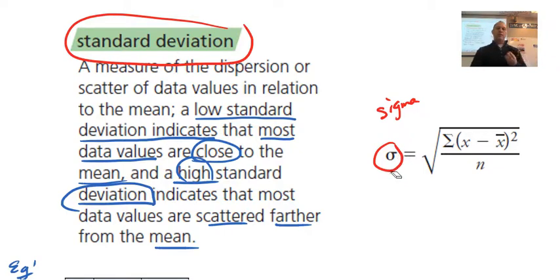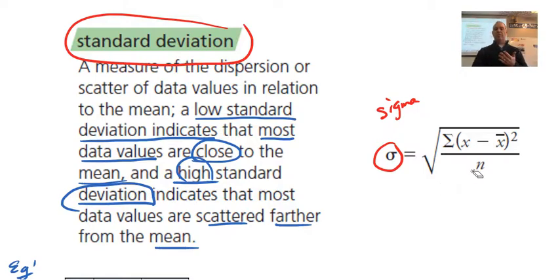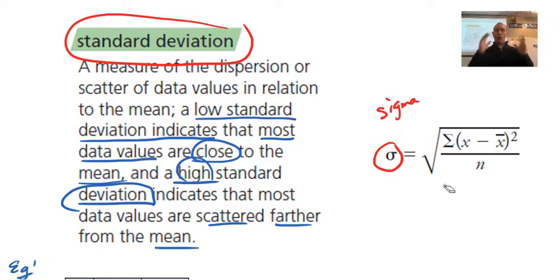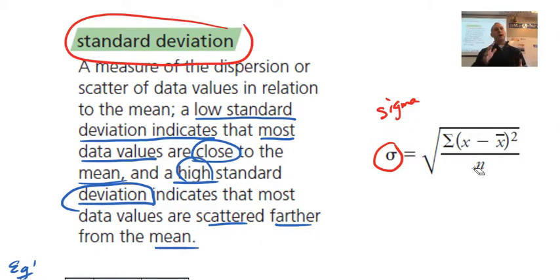On the calculator screen, you're going to see sigma x — that's the one we are going to be using. There is another line, capital S of x, and just in case you wonder why we're not using that one: the calculator calculates two different things. One is for data that represents the entire population. If it's just a sample from a larger population, there's a bias correction using a slightly different formula. We are not going to worry about that at all, so just ignore that other number.